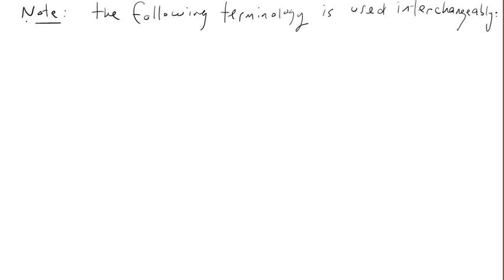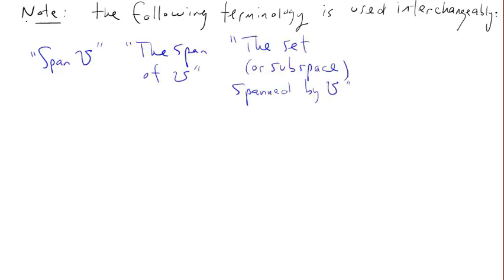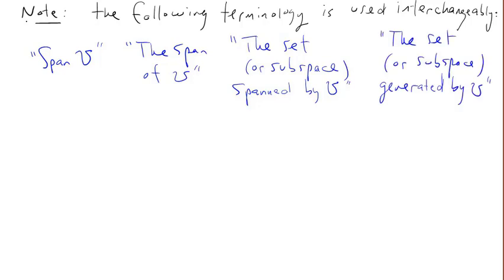Note that the following terminology for span is used interchangeably: span(V), the span of V, the set spanned by V, or subspace — we'll eventually call it subspace — and the set generated by V, or subspace. Again, these can all be used interchangeably.